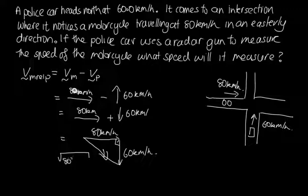It's 80 squared plus 60 squared, which when we solve that on the calculator, we end up with 100 kilometers per hour. So the radar gun is going to detect a speed of 100 kilometers per hour.